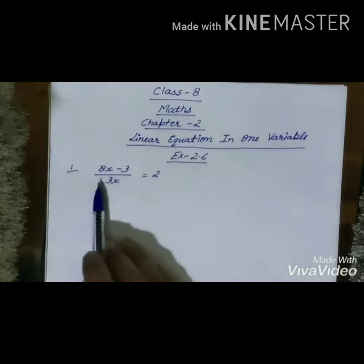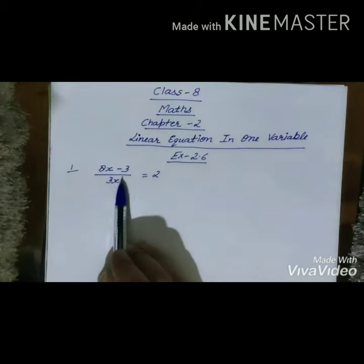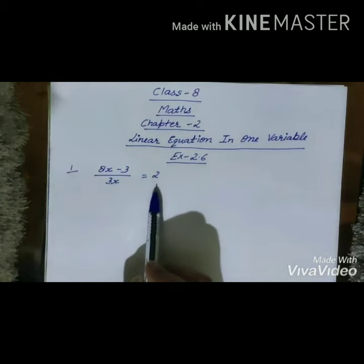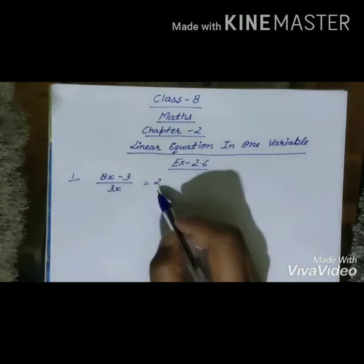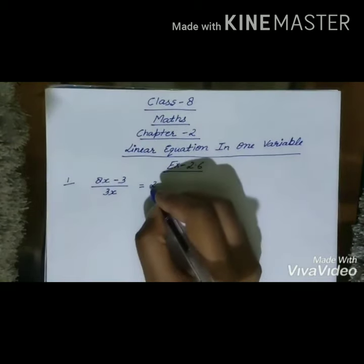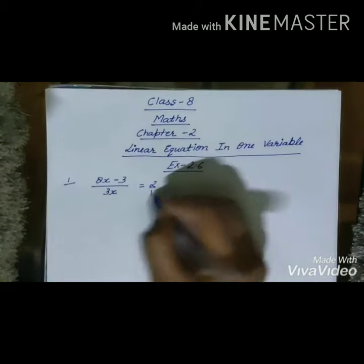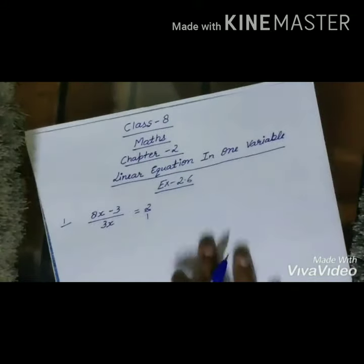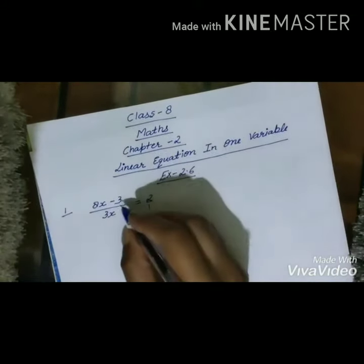The first question is: (8x - 3) / 3x = 2. As we know, if there is no digit in the denominator, we assume it as 1. So in the RHS, we don't have any digit in the denominator, so we'll assume it as 1, that is 2 upon 1. We solve this question using the cross multiplication method.